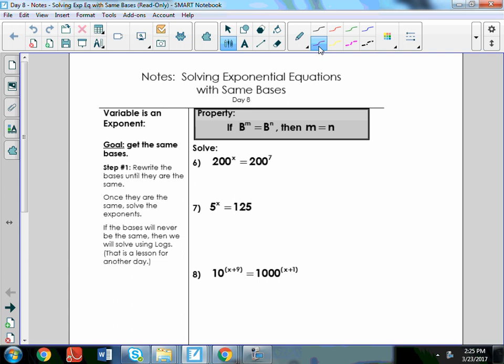When you have the same base, you're allowed to cancel the base, cross it off, and then you just solve the exponents. And we do this when you have a variable exponent. So, my goal is to get the bases the same, and then I can cross them off. I cancel the bases, and I solve the exponents.